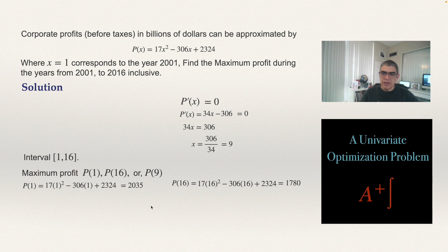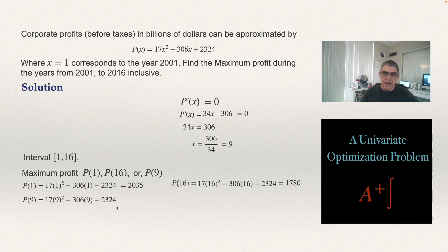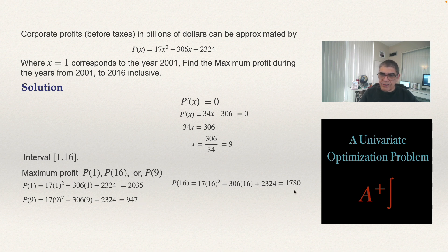Finally, we compute P(9) — the profit at the critical value, corresponding to 2009. Substituting x = 9 into the profit equation and using a calculator, the answer is 947 billion dollars. So P(9) = 947 billion dollars.